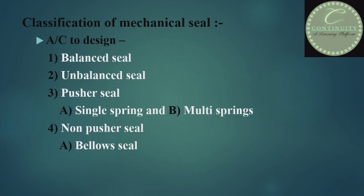The mechanical seal is classified according to design and arrangement. According to design, it is classified into four types: first, balanced seal; second, unbalanced seal; third, pusher seal; and fourth, non-pusher seal. Pusher seal is further classified into two parts: single spring seal and multi-spring seal.